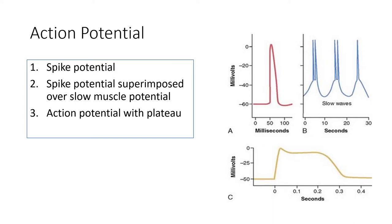The third potential is a prolonged depolarization, which accounts for sustained contraction of smooth muscle fiber. This includes a plateau phase and is seen in, for example, the ureter, uterus, and vascular muscles — it is an action potential with a plateau.